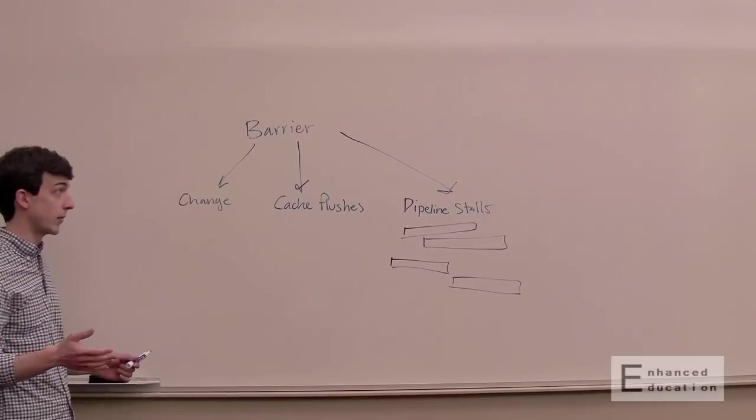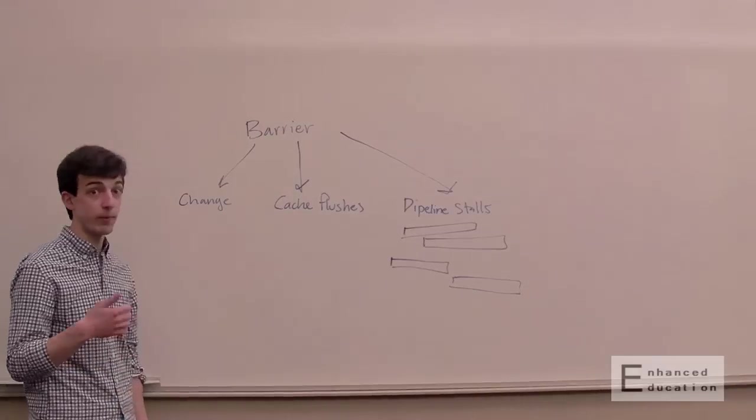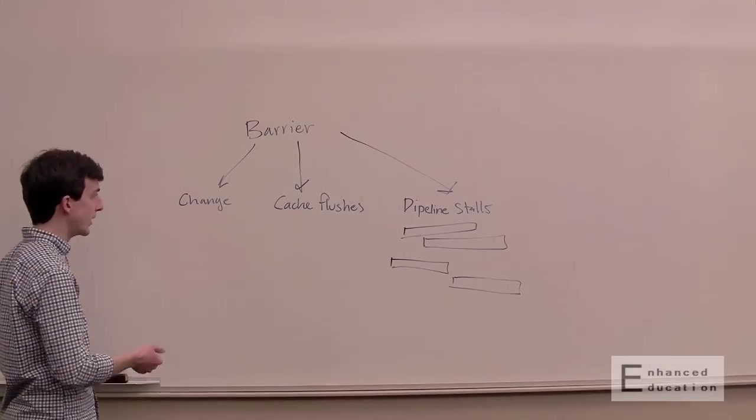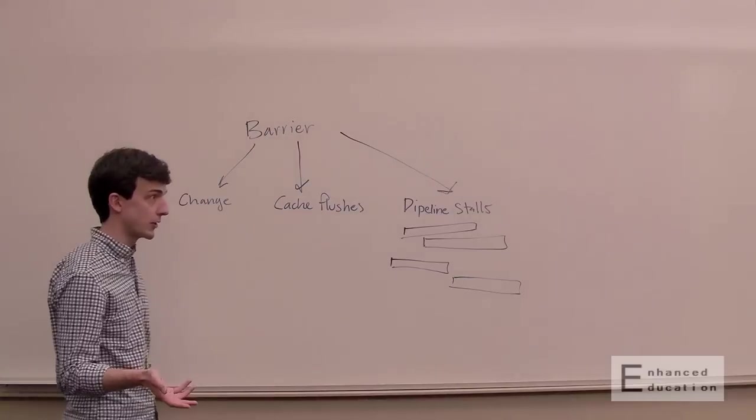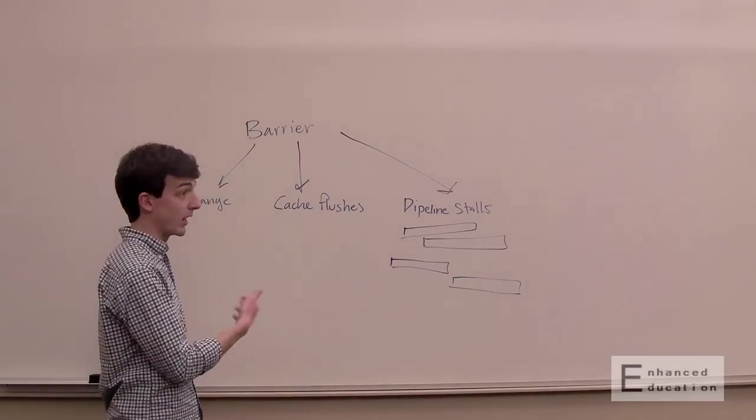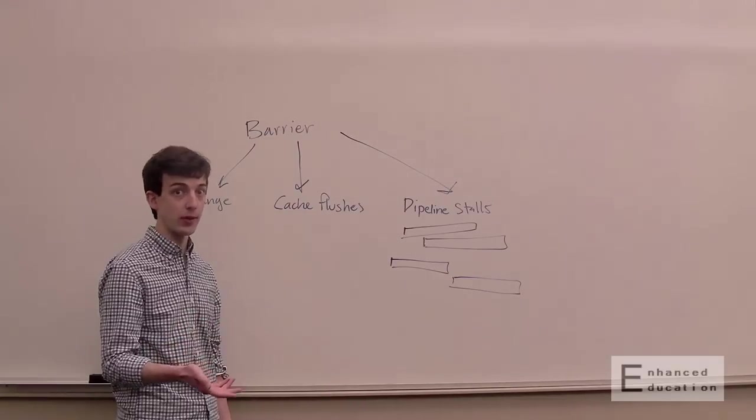That's why they're important for correctness. And as you can kind of see, that's why they also impact performance quite a lot. So any time you're asking the memory layout to change, the hardware is having to do something. Flushing caches is obviously a little expensive. Adding pipeline stalls, it might be needed but it's going to make things a little bit slower than they would otherwise be.